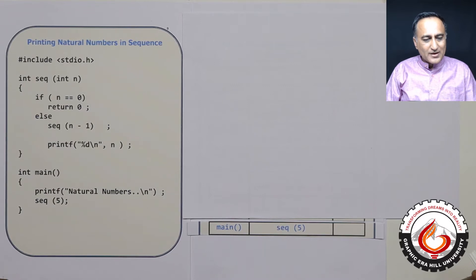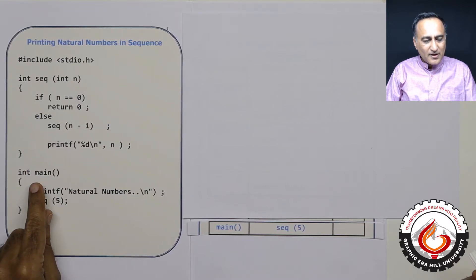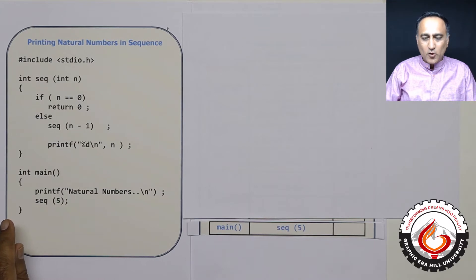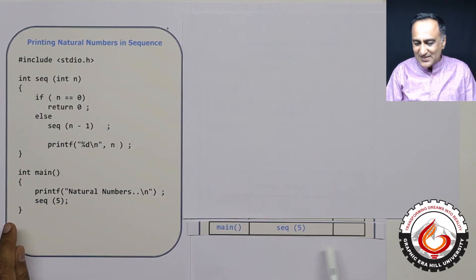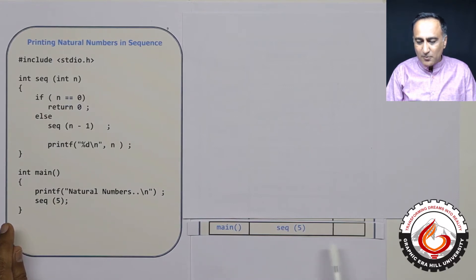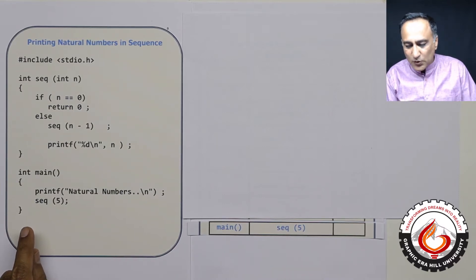Now what I'm going to do here is show you how to print natural numbers from 1 to 5. So I have the main function, and the main function is called by the operating system. So my stack is going to look like this — this is my first activation record or stack frame, and it is going to contain a call to sequence(5).